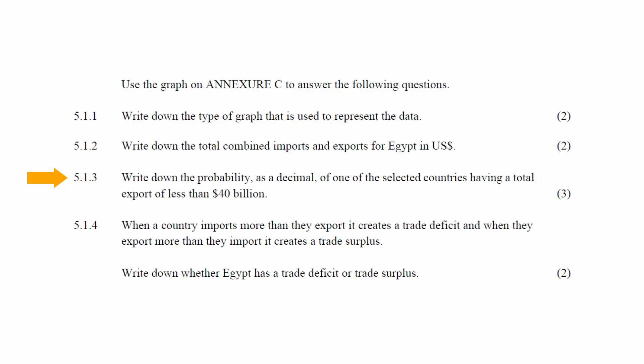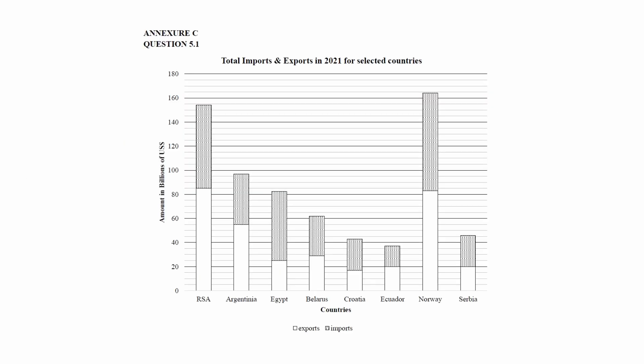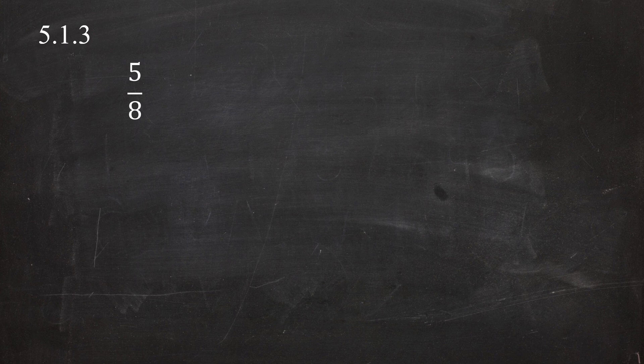In Question 5.1.3, you have to write down the probability as a decimal of one of the selected countries having a total export of less than 40 billion U.S. dollars. From the graph, we see that five countries out of the selected eight countries have a total export of less than 40 billion U.S. dollars. As a fraction, the probability of selecting one of these countries can be written as 5 over 8.